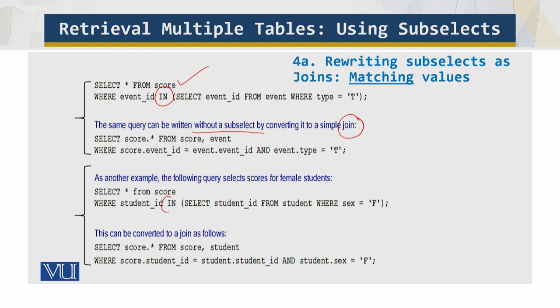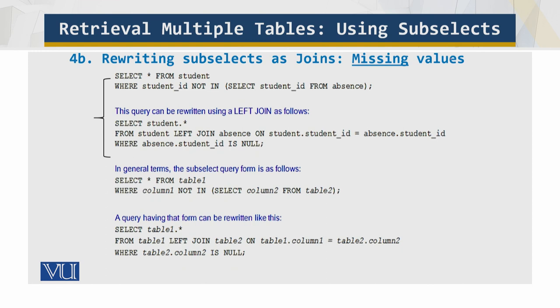Similarly, we have another query over here with subselect, and you can use it using a join and have the same results for the matching values. And for the missing values, what you do is use the NOT IN and they are the same equivalent. This is the power of the subselect and writing them instead using joins. So that's all I have for this module.